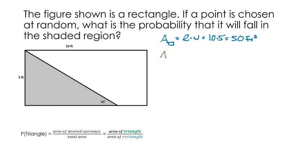The area of the triangle is going to be base times height divided by 2. The issue is we don't know the base — we just don't know what the bottom of that triangle is. But since the problem says we're dealing with a rectangle, we know this is a right angle, so it's a right triangle.